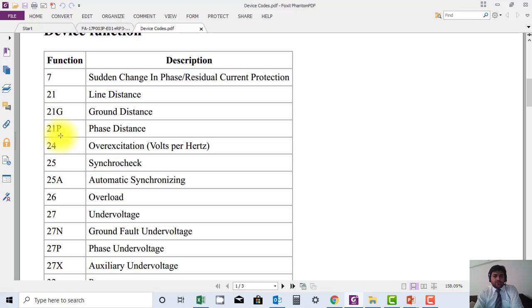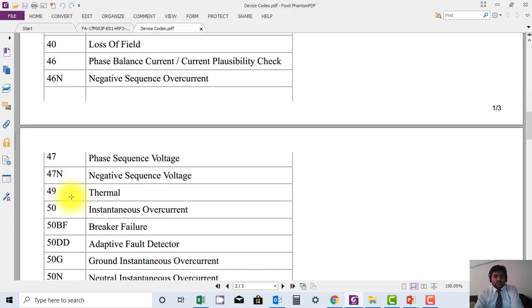Code 24 is used for overexcitation, 25 is used for synchrocheck. Similarly, you can find these codes.